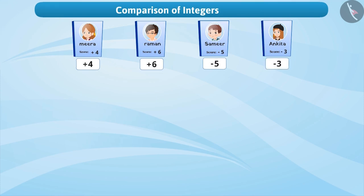To determine whose score is highest or whose score is lowest, we need to arrange them in a certain order. This is achieved by comparing each of their scores with the other. Let's compare the scores of Meera and Raman first.